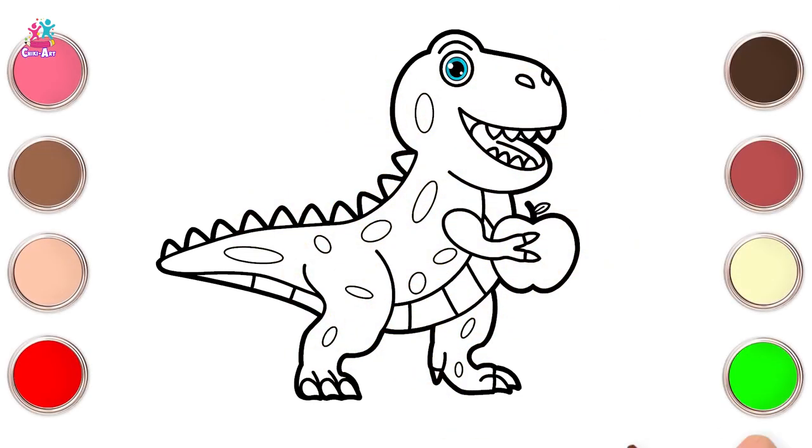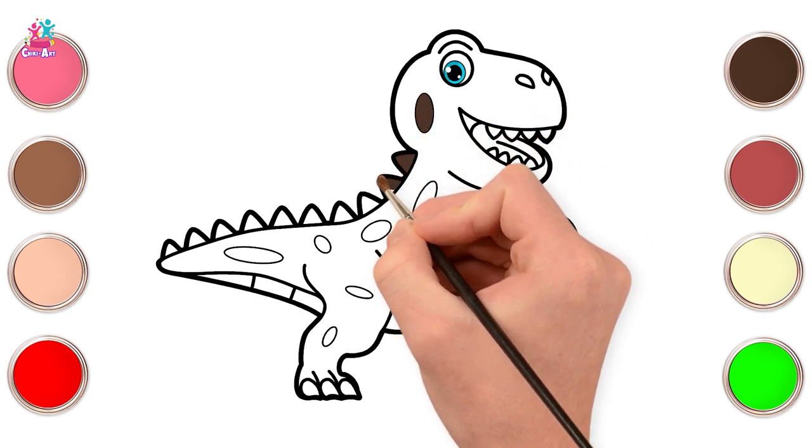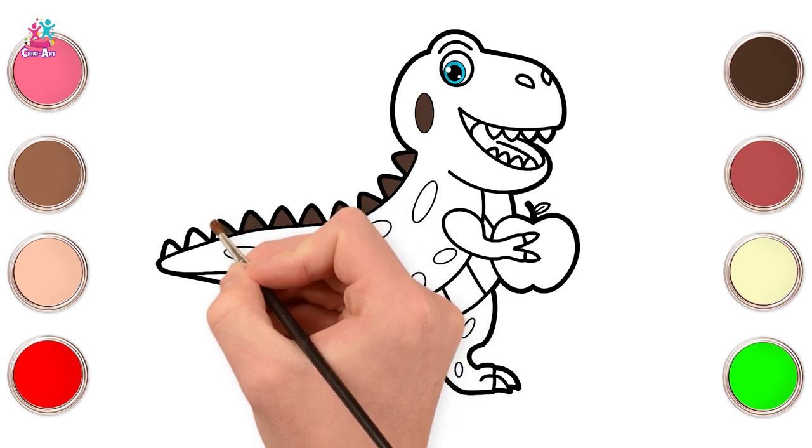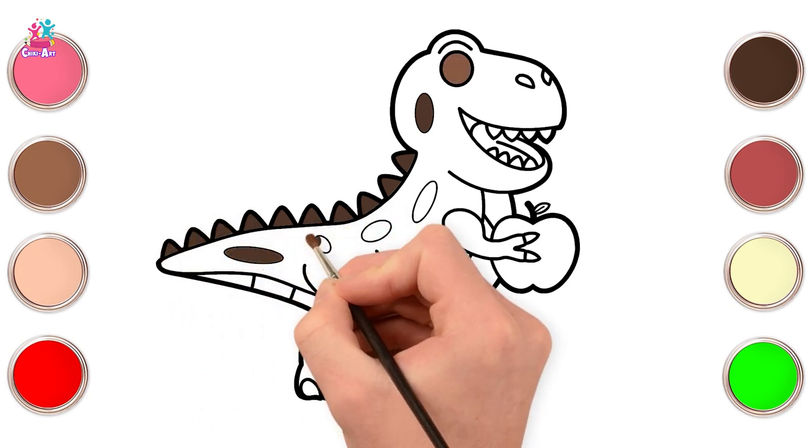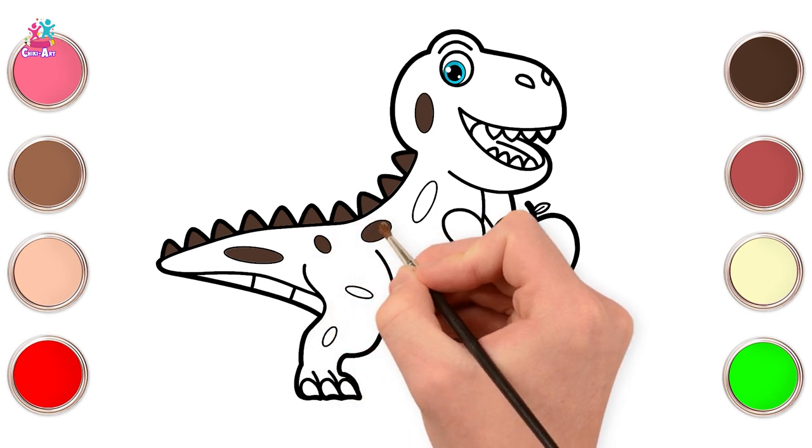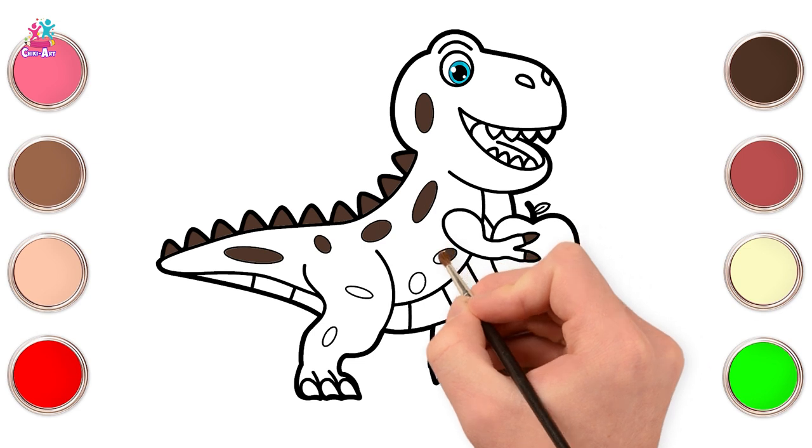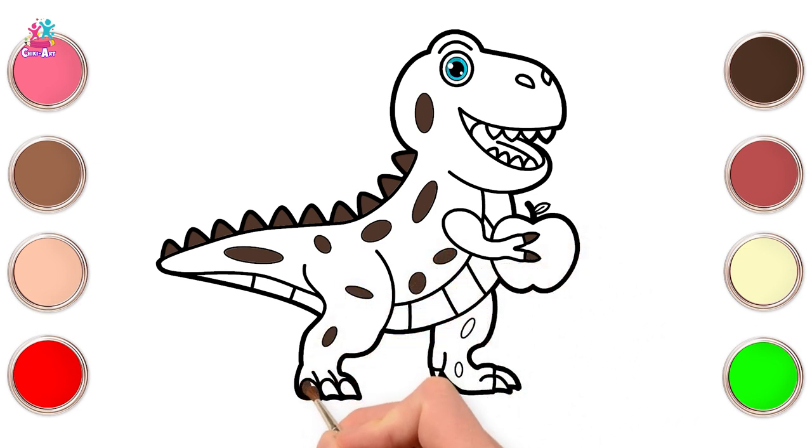Have you got your colors ready? Let's start. Dark brown for the round patches on the sides of his body. Don't forget the spikes and the claws.